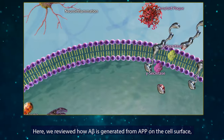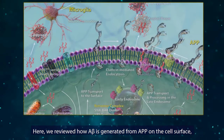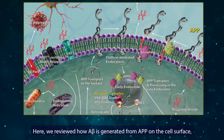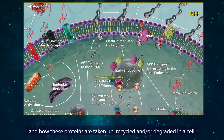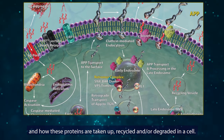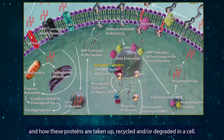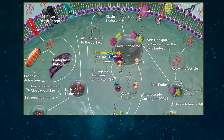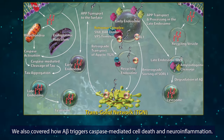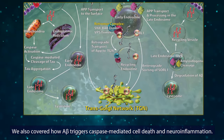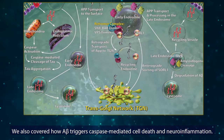Here, we reviewed how amyloid beta is generated from APP on the cell surface and how these proteins are taken up, recycled, and or degraded in a cell. We also covered how amyloid beta triggers caspase-mediated cell death and neuroinflammation.